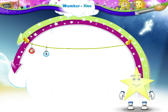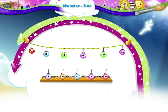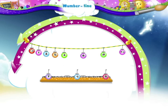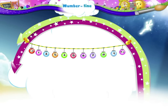Here is another number line story, but some of the beads are missing. We have to drag the missing beads to their correct positions. Shall we begin? The number line reads 0, 2, 4, 6, 8, 10. The number after 0 is 1. The number after 2 is 3. The number after 4 is 5. The number after 6 is 7. The number after 8 is 9. Now let us complete this number line.